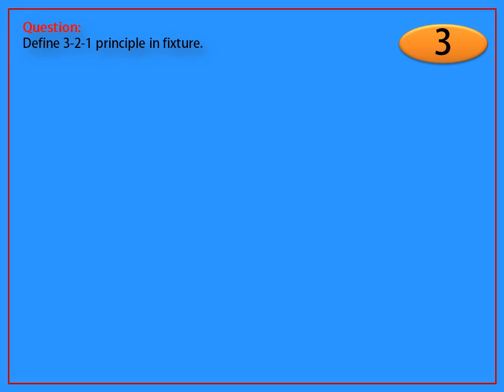Question: Define 3-2-1 principle in fixture. Answer: 3-2-1 concept ensures that all the six degrees of freedom will get locked.